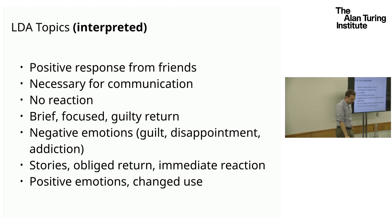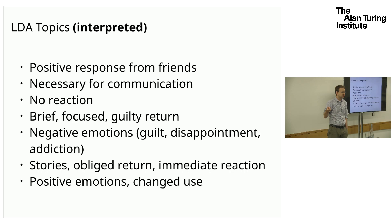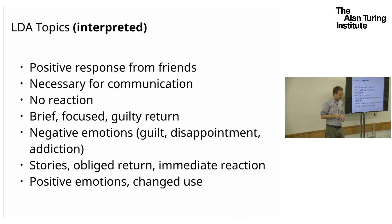After reading through documents sorted by topic loadings, my interpretations were: topic one — positive responses from friends; topic two — necessary for communication; topic three — nobody cared; topic four — the brief guilty return; topic five — negative emotions; topic seven — storytelling modality; and then positive emotions and changed use. None of this was obvious from the top words alone — it was only after actually reading documents sorted by topic loadings that it made sense.